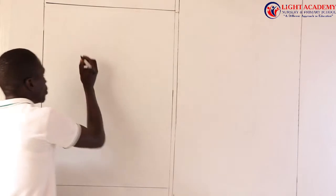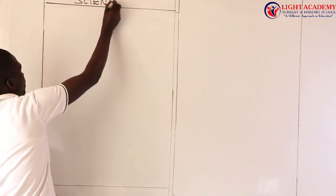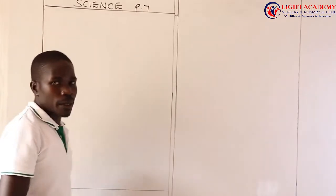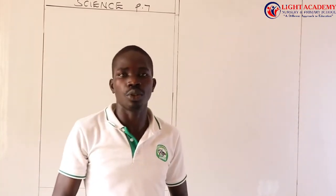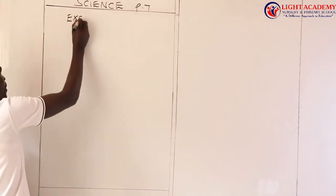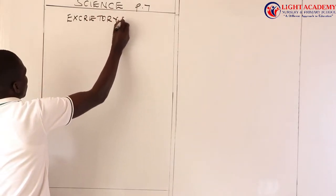This is a topic which we need to look at so that we can cover it. Just remember, it is time to wash our hands as we are fighting COVID-19. Our topic, which we are going to look at, is science — Primary 7 science. Our topic is the excretory system.